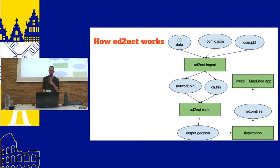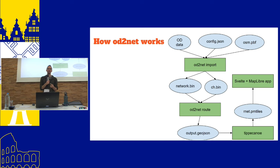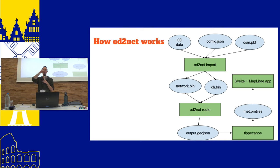The way it works: you specify inputs, run the tool, and it parses OSM data and builds a graph data structure for routing. The actual routing happens via a technique called contraction hierarchies, used by a lot of open source routing engines. The contraction hierarchy library OD2NET uses was written by one of the GraphHopper developers in about two weeks — they learned Rust and produced an extremely fast library. You get results expressed as a GeoJSON file where every line string is one road between two intersections. Then a standard tool called Tippecanoe converts it to PMTiles to render in the web app.